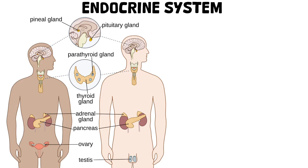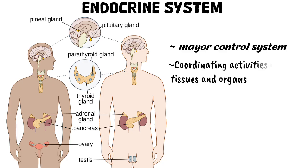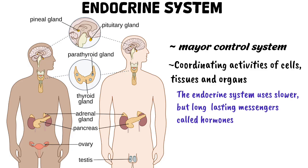The endocrine system is one of the major control systems of the human body, working alongside the nervous system to regulate and coordinate activities of cells, tissues, and organs. While the nervous system uses rapid electrical impulses for communication, the endocrine system uses slower but long-lasting chemical messengers called hormones. These hormones are secreted by endocrine glands and they travel through the bloodstream to target cells throughout the body.